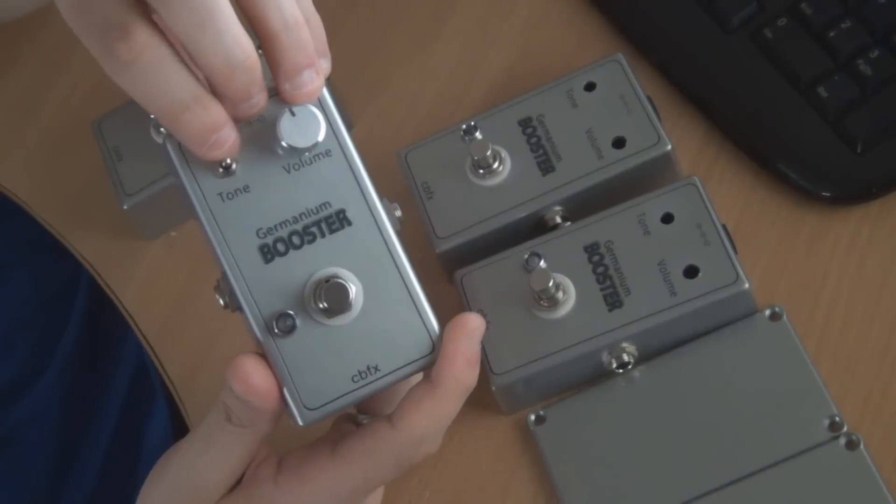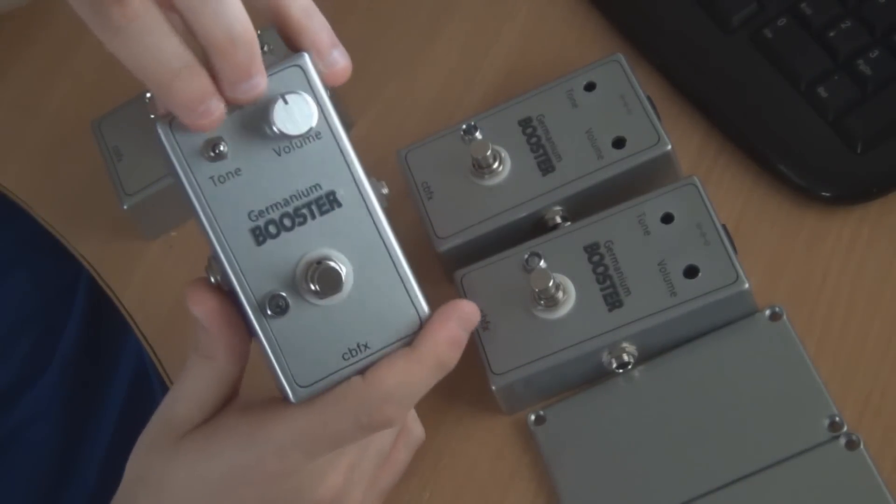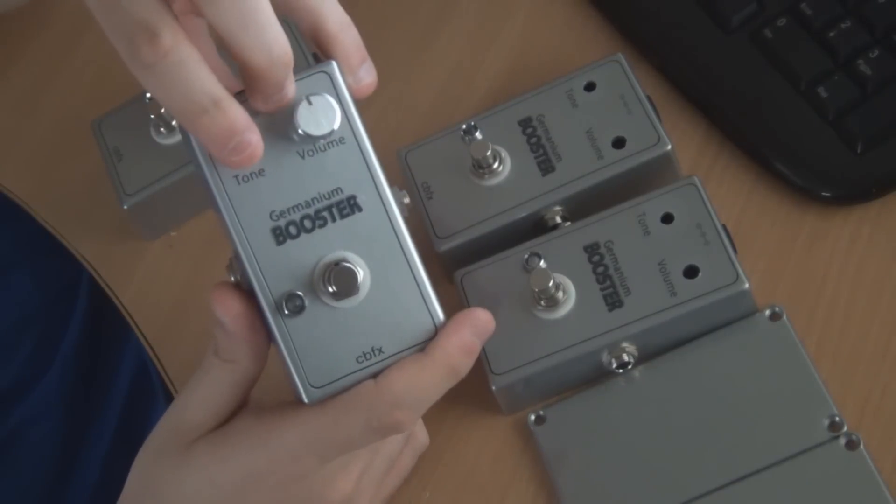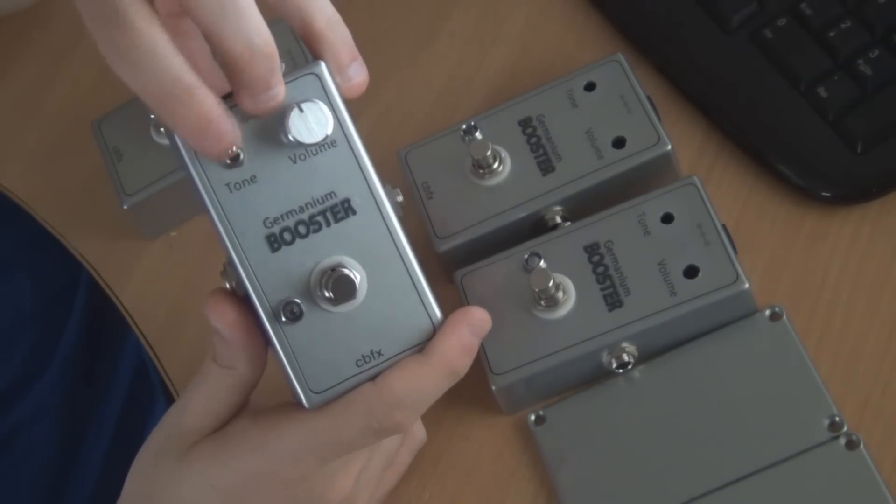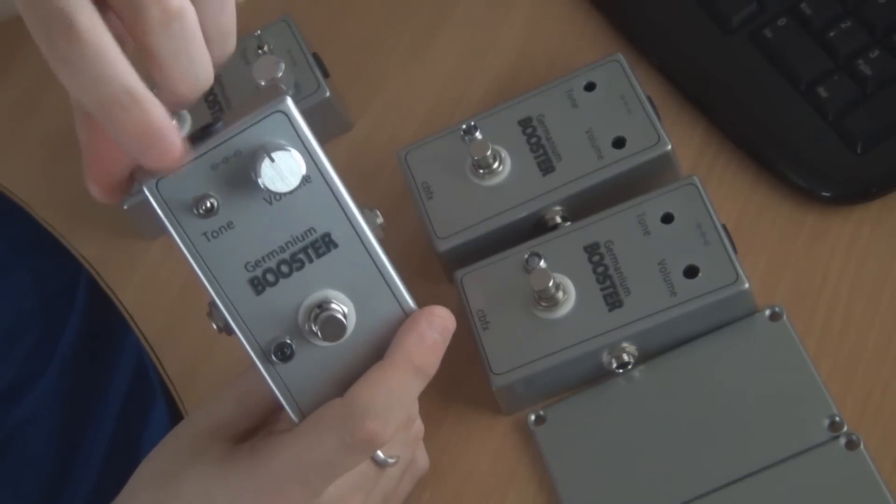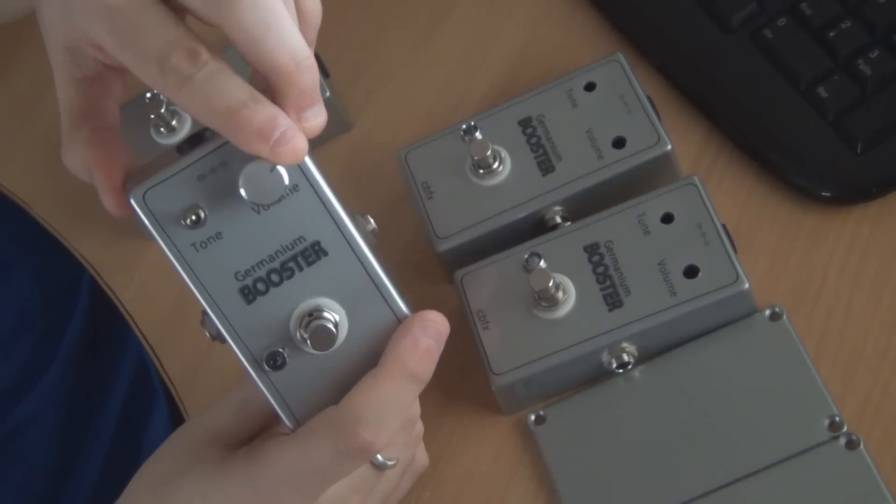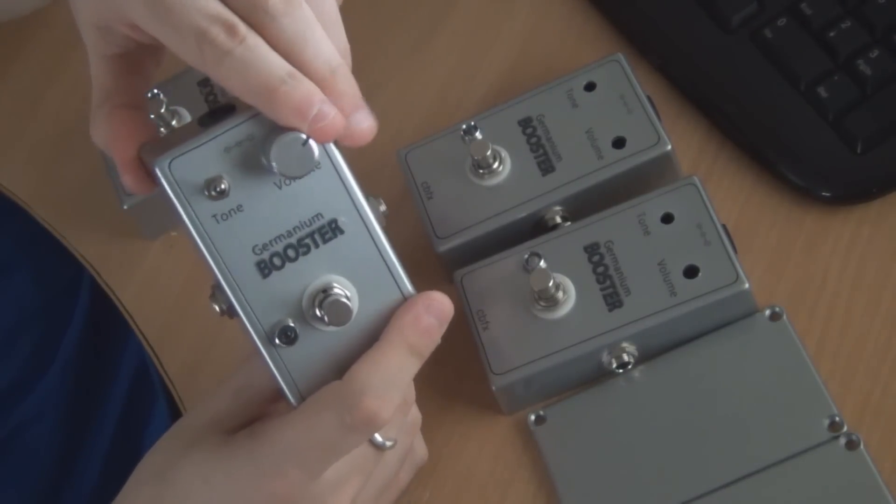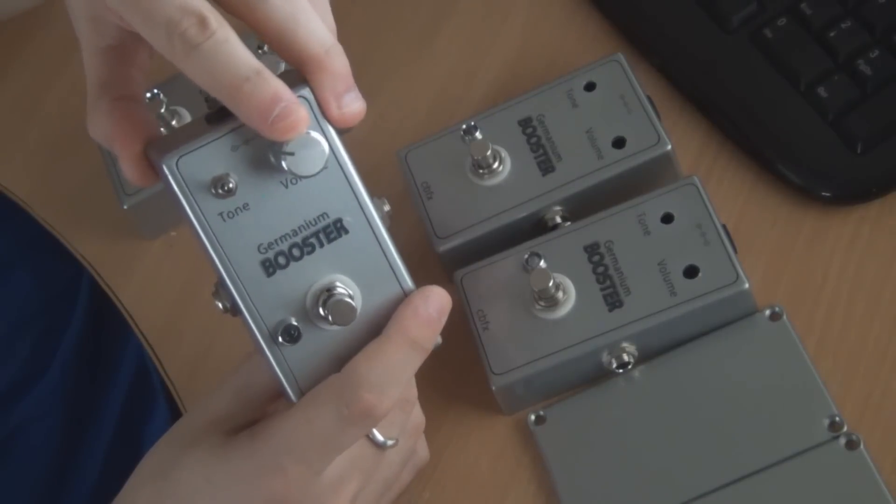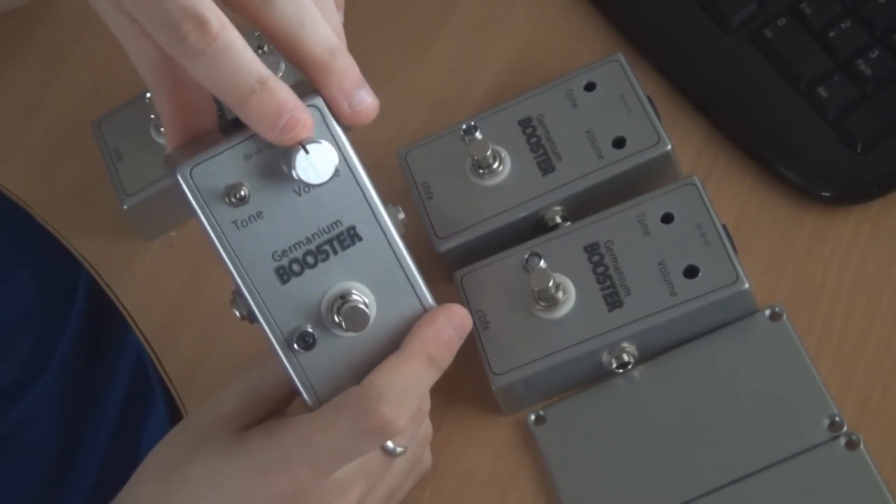I've found it quite useful when you're changing between bridge pickup and neck pickup. Changing this as well comes in handy. It basically just controls how much bass goes into the booster and gets boosted. And then you've just got the amount of boost on this side, and the more you turn it up the more the germanium clips. It clips a bit, not a huge amount, but it does clip. I'll show you that in the sound demo.